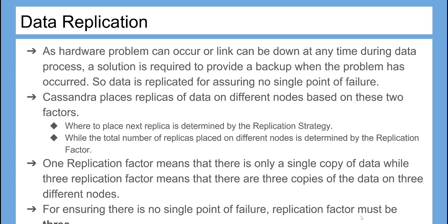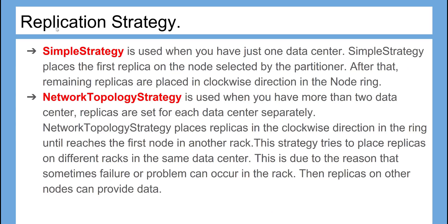One replication factor means there is only a single copy of data, while three replication factor means there are three copies of the data on three different nodes. For ensuring there is no single point of failure, replication factor must be three. Simple strategy is used when you have just one data center. It places the first replica on the node selected by the partitioner, and remaining replicas are placed in clockwise direction in the node ring.